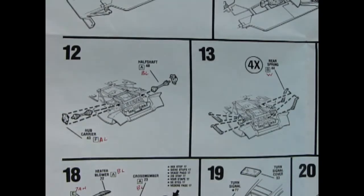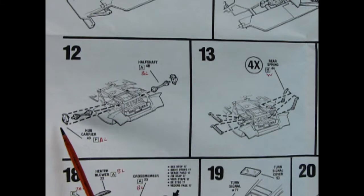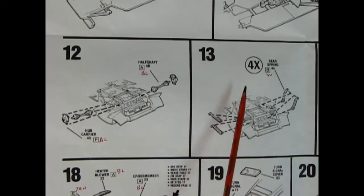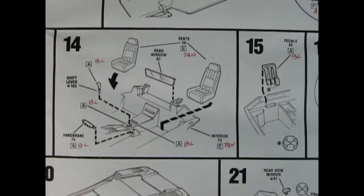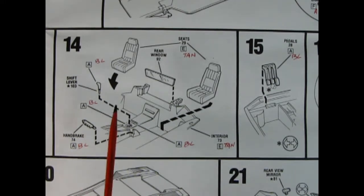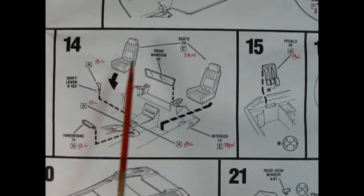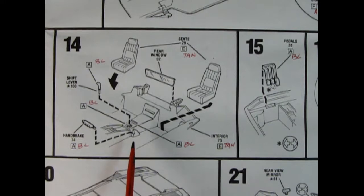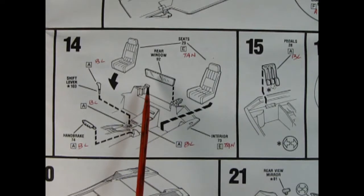Panel 12 shows our independent rear suspension being glued into place. This is the hub carrier on the outside and then we've got our half shafts in here and then panel 13 shows the shock absorbers which you do four times. In panel 14 we see our interior being glued together. Here we have these nice bucket seats which drop onto our floor pan. Then we've got our shifter lever and our hand brake as well as this nifty rear window. And don't forget your pedals in panel 15.